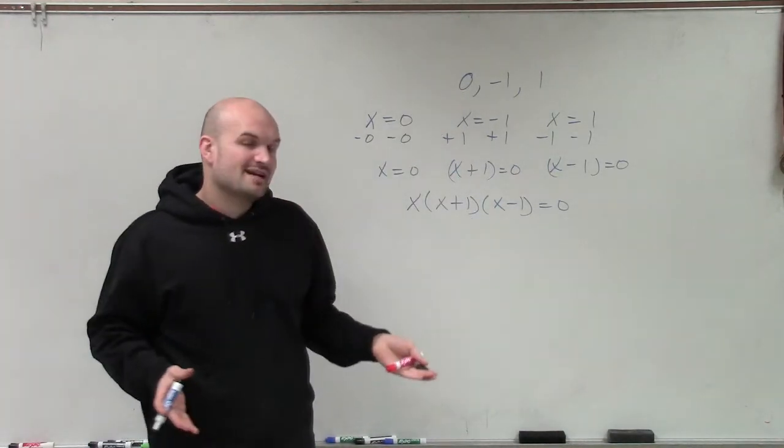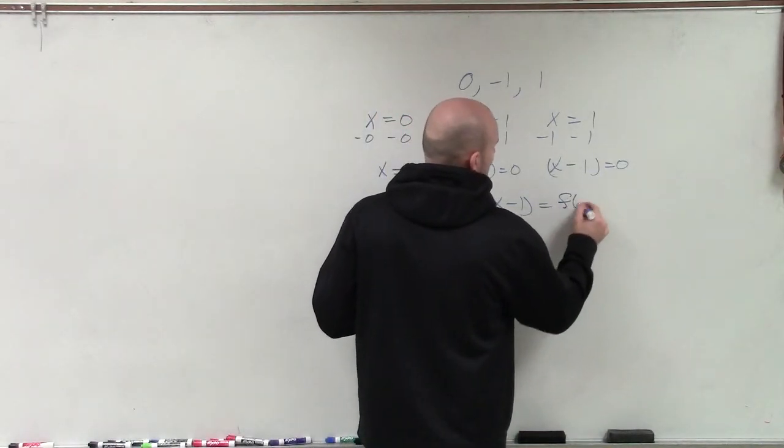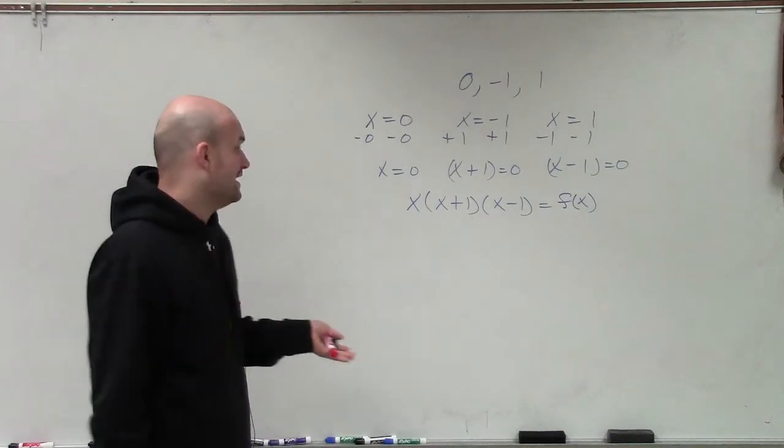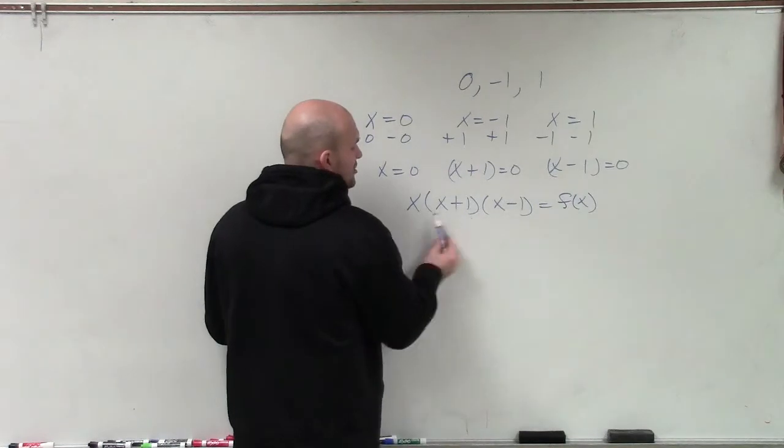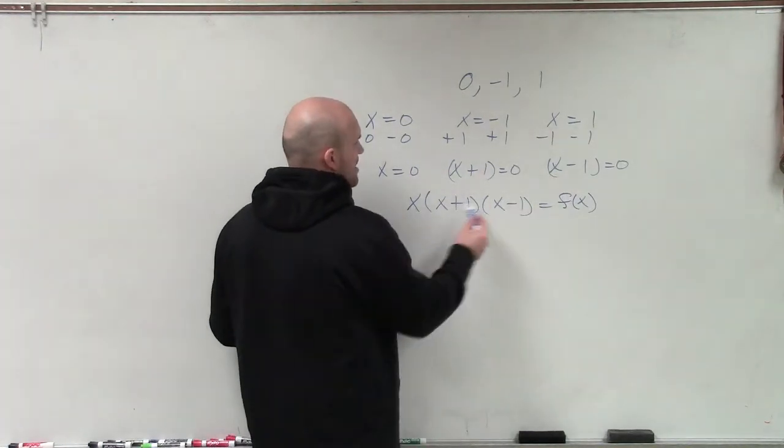But again, we're not trying to solve, set this equal to 0. We're actually trying to find out what is the polynomial equals f of x. Now, what I simply need to do is just multiply this out to find this function. Now, I'm going to multiply these two binomials because I notice that it is a difference of two squares.